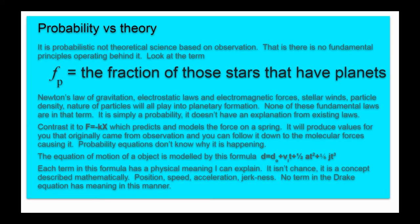But I have a much larger problem with it. It's not Drake, it's what people do with the Drake equation that is the problem. This is not physics, it's a probabilistic formula, not theoretical based on observation. That is, there is no fundamental principle operating behind it. Look at this term for example, the fraction of those stars that have planets.